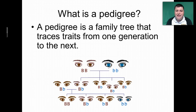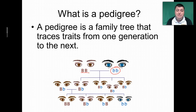Here we've got eye color. If eye color was inherited simply with just a dominant and a recessive allele, we could understand why this blue-eyed trait skips a generation and then shows up in the grandchildren, because it was carried by those parents and then passed down.